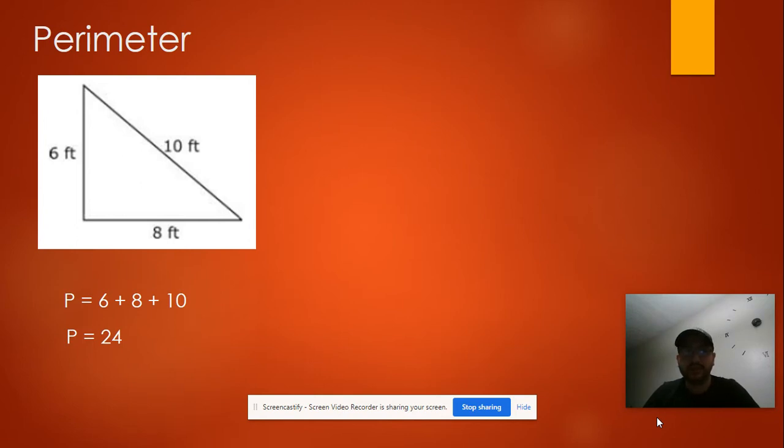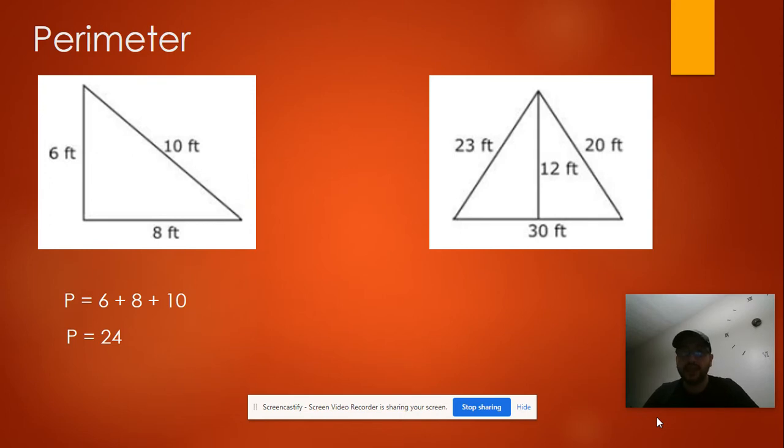Let's see another example, like this one. In this triangle, we need to add the surroundings, but only the surroundings. A common mistake will be adding all the numbers. No, it's only adding the surroundings. In this case, it will be 23, 30, and 20. The 12 is the height, but it's not included in the perimeter. So my perimeter in this case will be 73.